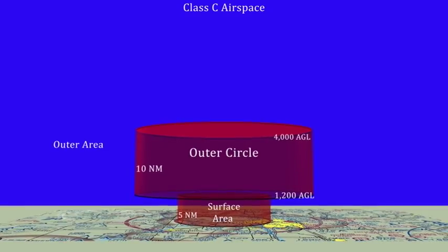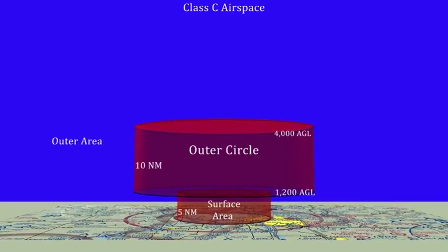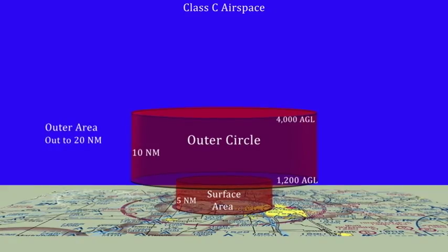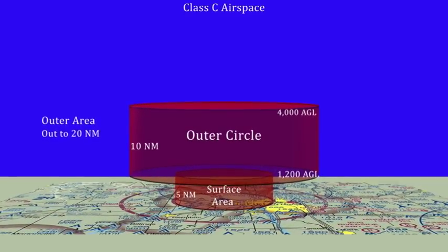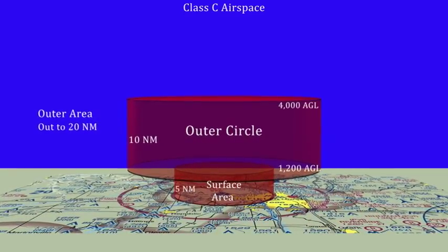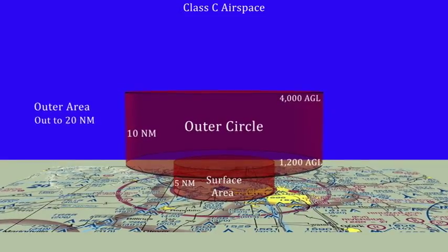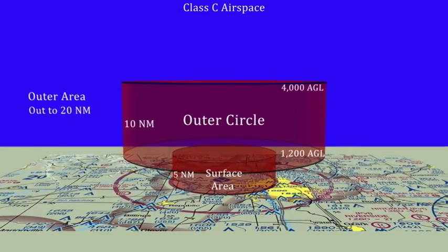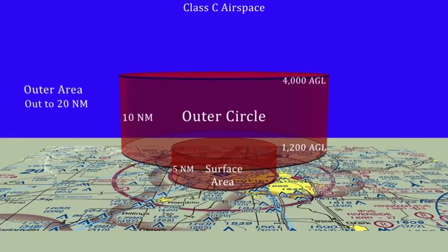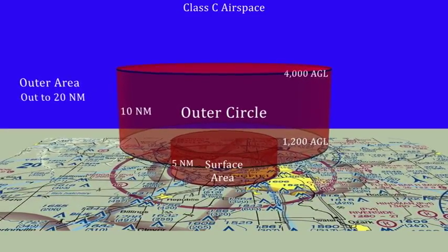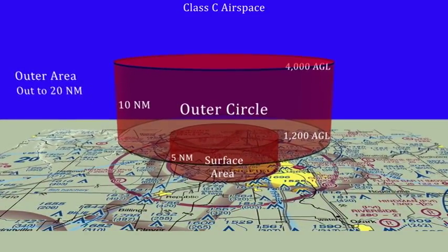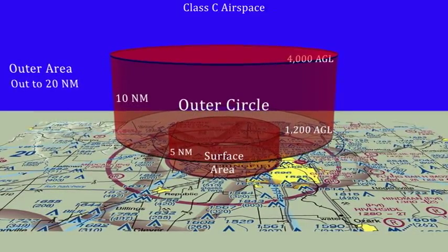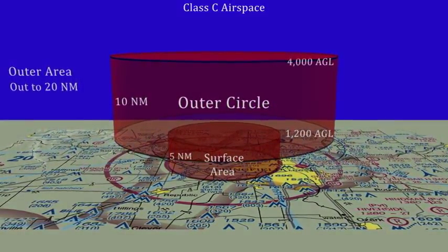The outer area, which extends 10 nautical miles beyond the outer circle, is not part of the Class C airspace. It is actually Class E airspace most of the time. However, pilots are strongly encouraged to participate in the air traffic control services available in the outer area. Since the outer area is not actually part of the Class C airspace, this pilot participation is not mandatory.